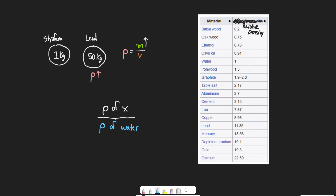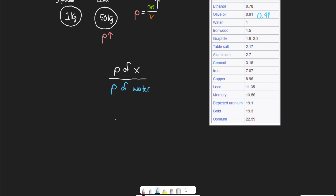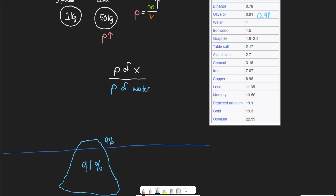This very simple number tells us whether the thing is going to float or not in water. Another cool thing it tells us is what percentage of that object is going to sink in water. For example, ice has a specific gravity of about 0.91, which means that 91% of a given ice cube is going to sink in water. So if this is the water line and we've got an iceberg, about 91% of it is below water and about 9% is above water.